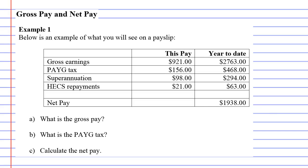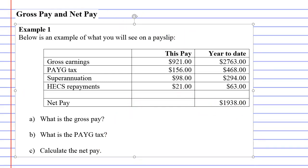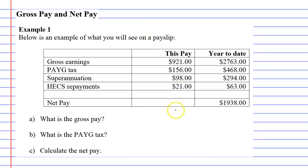The first question is: what is the gross pay? You'll notice two columns — what's called 'this pay' and 'year-to-date.' We'll just focus on 'this pay' and I'll explain what the year-to-date part is all about a bit later. So focusing on 'this pay' only — the gross pay is $921. We can see it lines up with gross pay here.